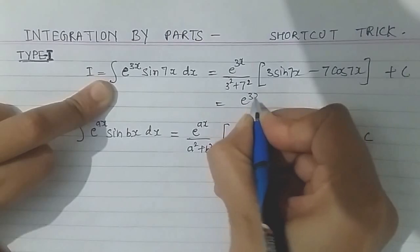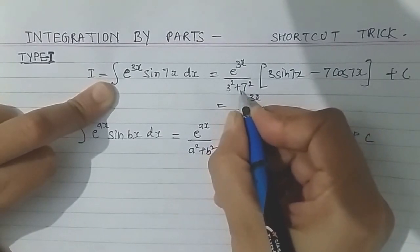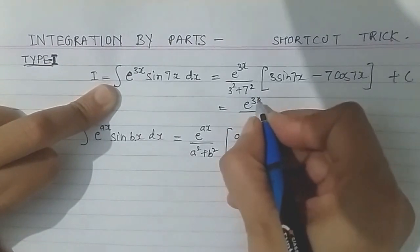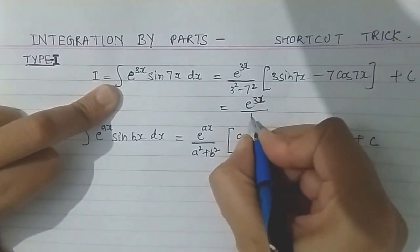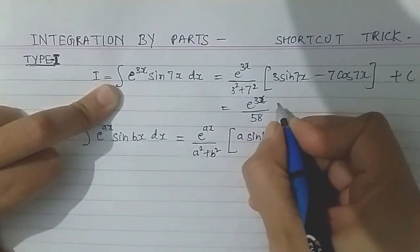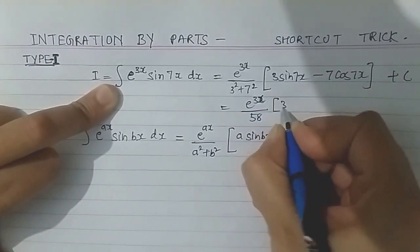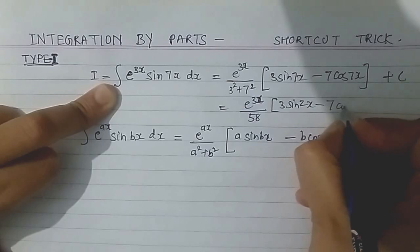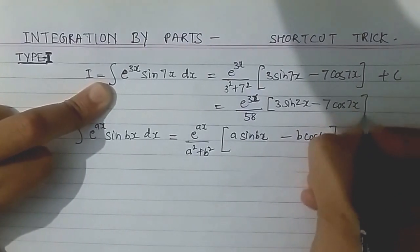So the next step: this will become e power 3x divided by 3 squared is 9, 7 squared is 49, so 49 plus 9 is 58. And this becomes 3 sine 7x minus 7 cos 7x plus c.